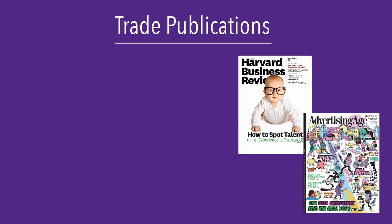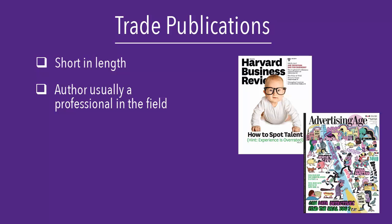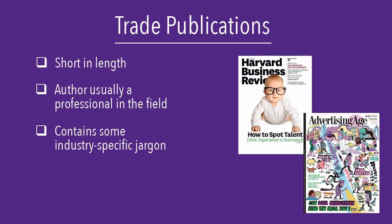Trade publications sometimes look like magazines, but they contain different content. Articles in trade publications may still be fairly short, but they are written by professionals and for professionals in a specific field. There will be some industry-specific jargon in the articles.